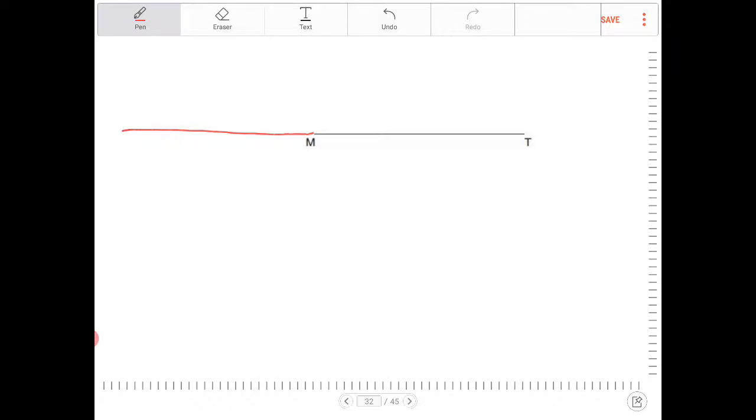What segment are we actually bisecting? So what I would do is I want to instruct you to place your pin on point M, open up your compass to whatever setting you'd like, but open it up, and I want to ask you to make the following markings.